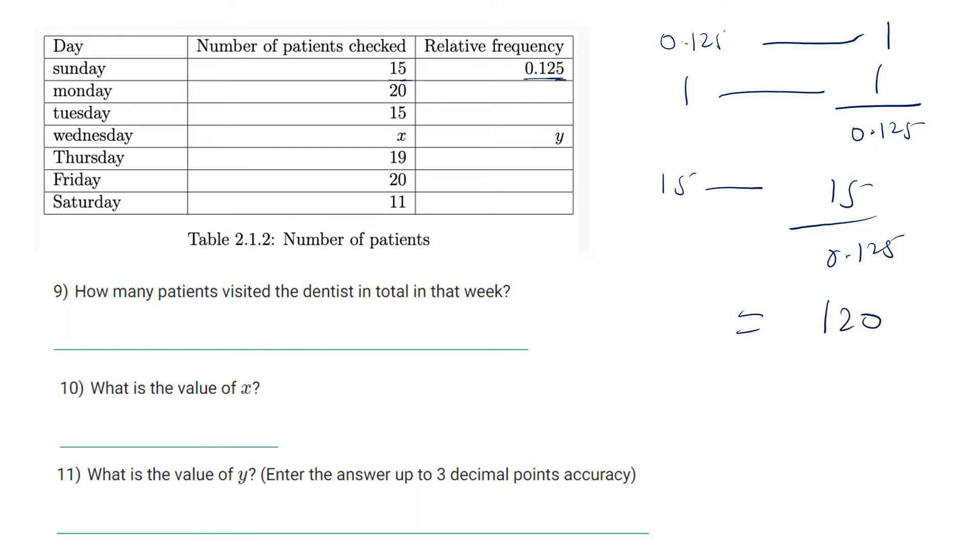So total number of patients, it should be 120. What is the value of x? Let's see, 15 and 15 is 30, then 19 and 11 is 30, plus 20 is 50. It will be 100 and total will be 120, so x will be 20.